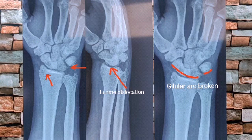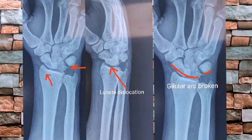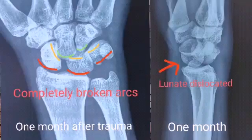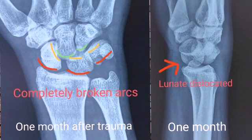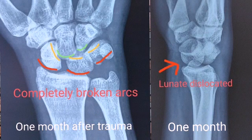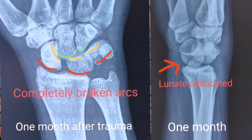And on the lateral view, we can see lunate dislocation. This patient had follow-up X-rays after the first and second months of the trauma.